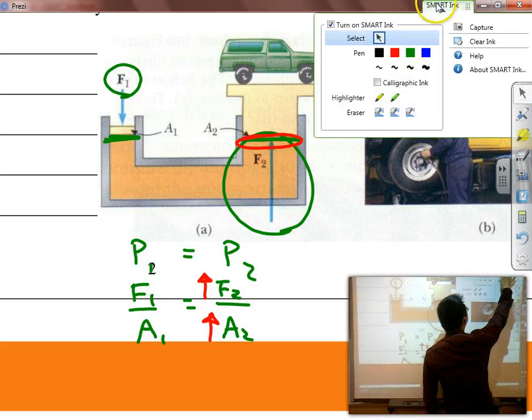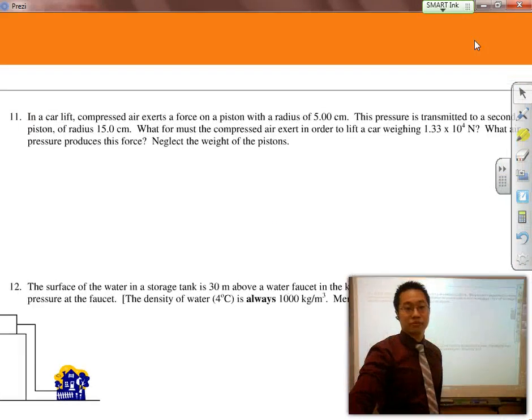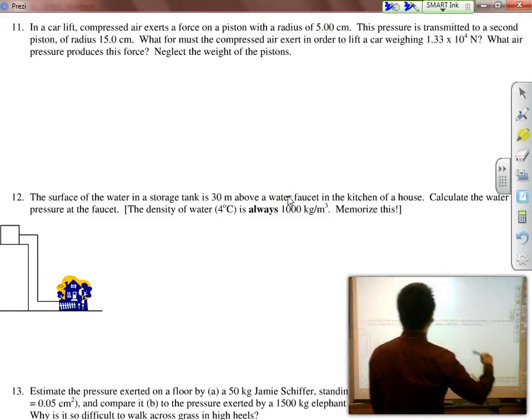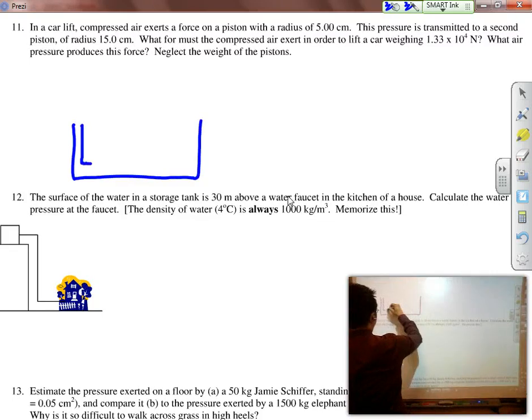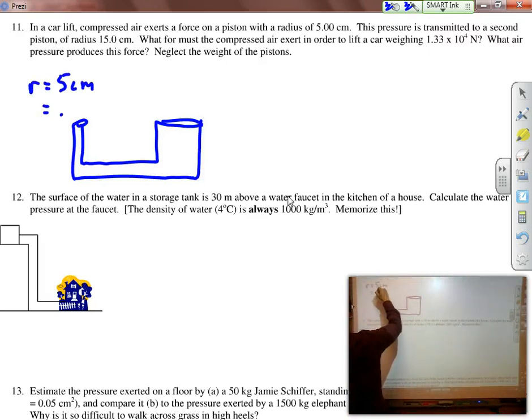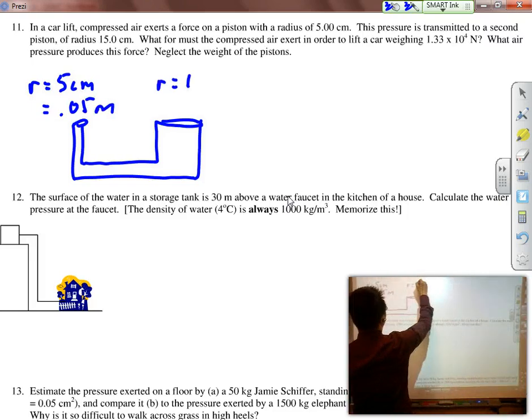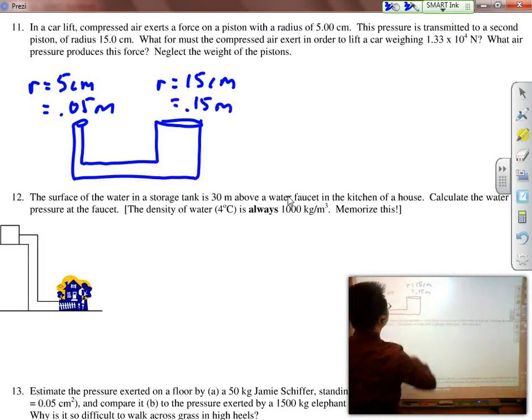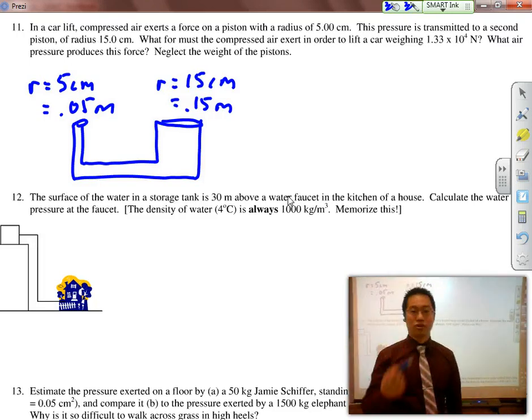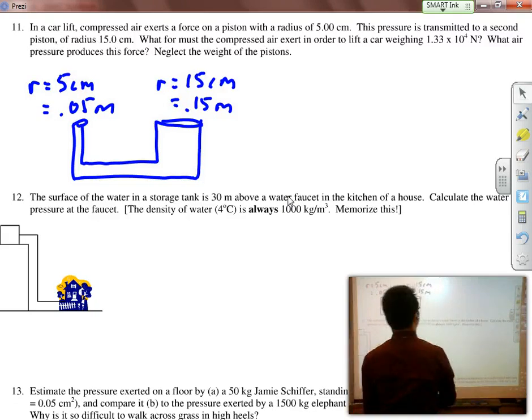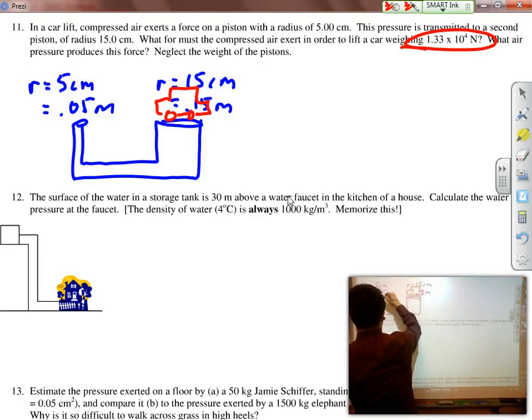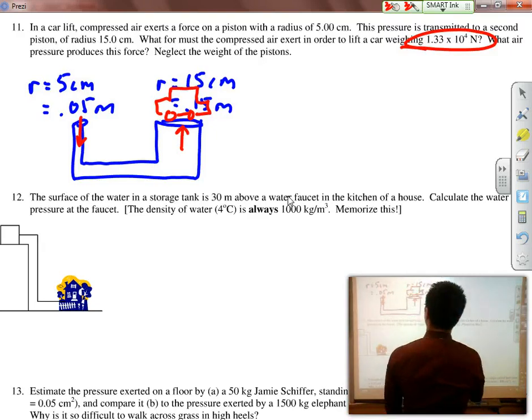But they have different area sizes, different piston sizes. So if I wrote it out as F1 over A1 equals F2 over A2, I can see that if I increase the area of the lift, I automatically increase how much force is being applied because there's a lot more water over here that's applying that upward force due to the pressure that exists. If we were to actually solve this as a problem: In a car lift, compressed air exerts a force on a piston with a radius of 5 centimeters.